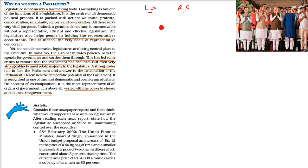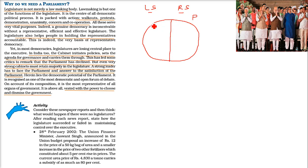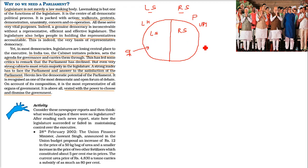Let me tell you about Lok Sabha and Rajya Sabha. This is our Parliament, divided into two houses — the lower house and the upper house. The lower house is Lok Sabha, and the upper house is Rajya Sabha. The lower house is directly elected by people like you and me. Rajya Sabha is elected by the MLAs of the state.